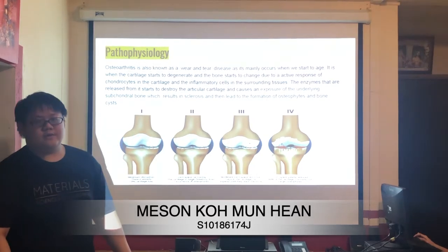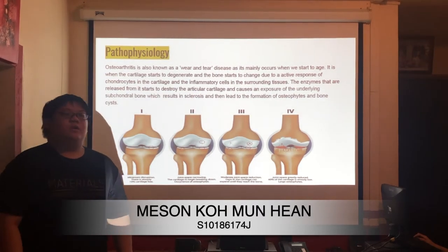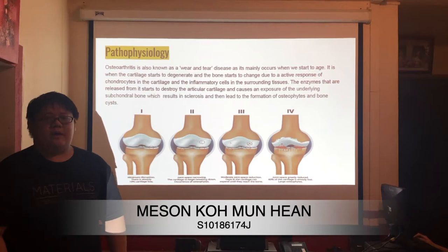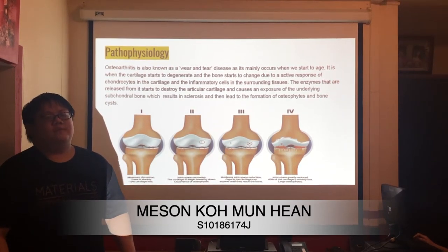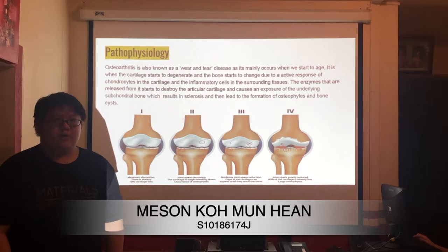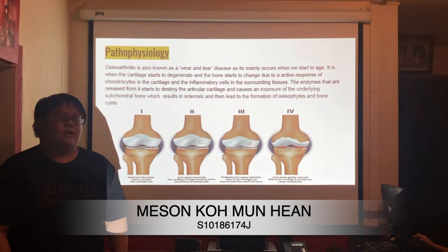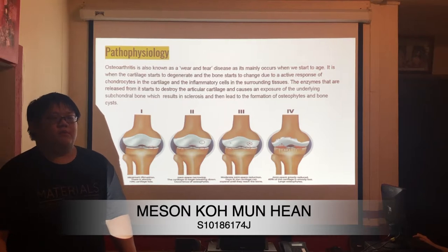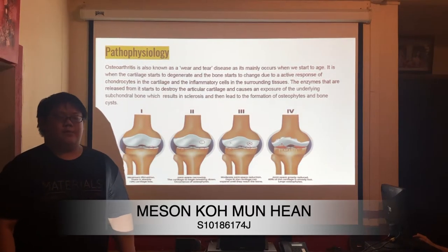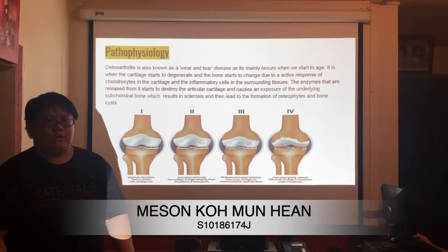The pathophysiology of osteoarthritis: this is mainly a wear and tear disease that occurs as we age. This causes bone remodeling due to the active response of chondrocytes found in the articular cartilage and inflammatory cells in the surrounding tissues. Chondrocytes are cells that produce a matrix in the cartilage. This leads to a breakdown of collagen and proteoglycan, breaking the articular cartilage. The underlying subchondral bone then causes sclerosis, bone remodeling, and thus osteophytes and cysts.